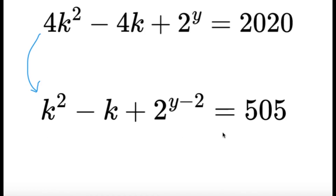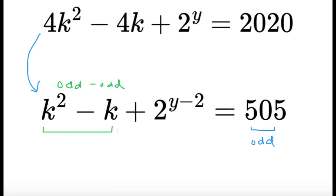Again, we can check the parities. 505 is odd. Now, k² − k is interesting: if k is odd, then k² is odd and k is odd, giving odd minus odd which is even. If k is even, then k² is even and k is even, giving even minus even which is also even. So k² − k is even for all values of k, whether k is odd or even.